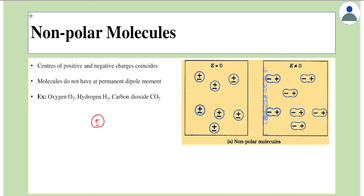If we apply an electric field to this molecule — thinking of a single molecule — we learned in the previous lecture that dielectrics can be polarized. Because of the applied field, the center of positive charge will shift. Earlier the center of positive and negative charge was at the same point, but now the molecule becomes distorted where the center of positive charge is on one side and the center of negative charge is on the other side — so the molecule is now polarized, and poles have been created.